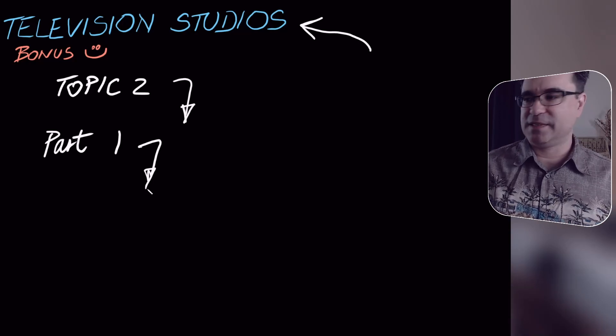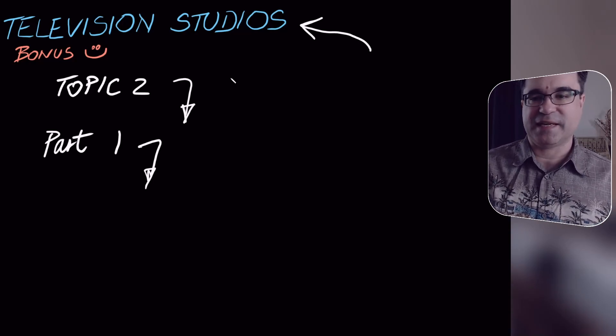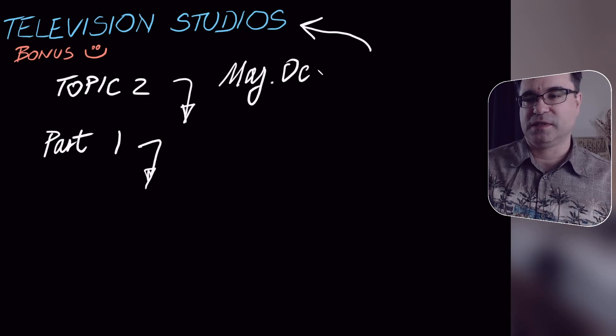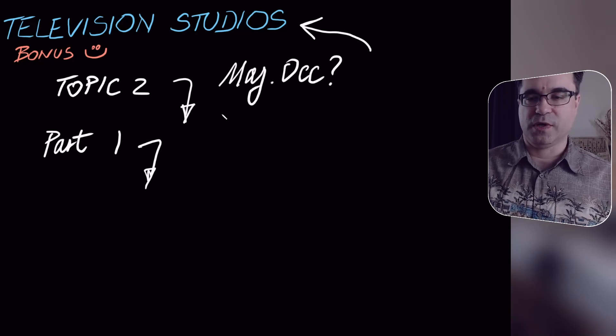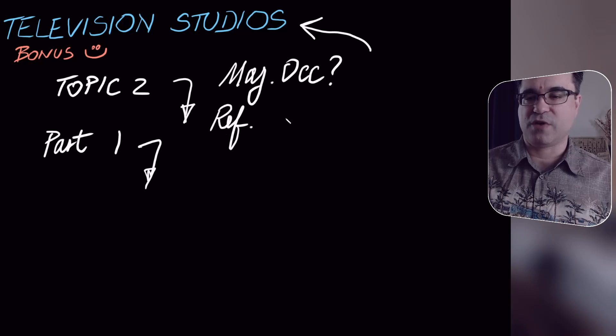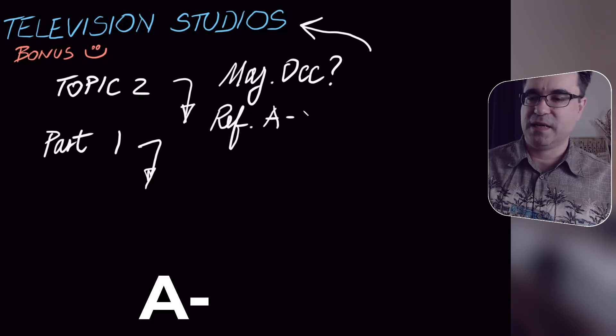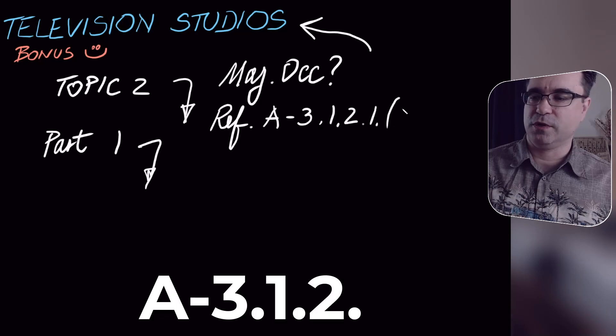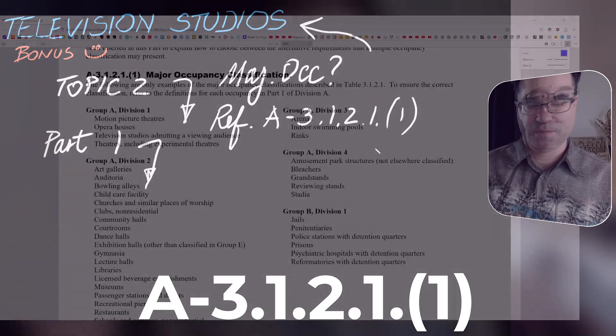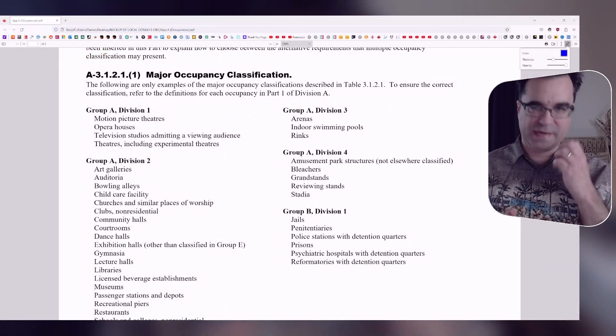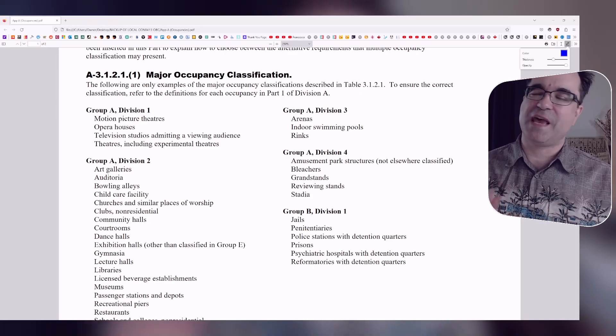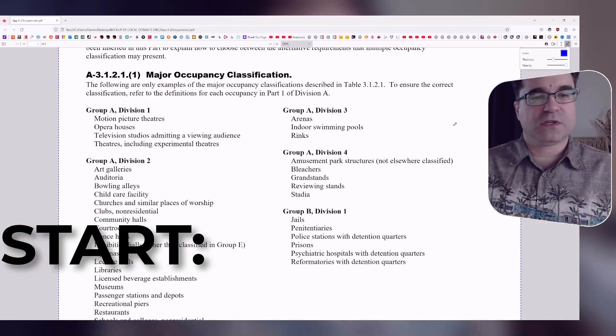Now, in order to complete the task at hand, which is to find the major occupancy of television studio, what we want to use is this resource. Reference in appendix A is going to be sentence 3.1.2.1.1, which is right here. This is what we're going to be using. And if you're wondering why and how, go back to the first part of this example and topic two. We're going to start right here.